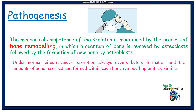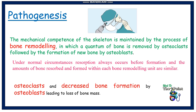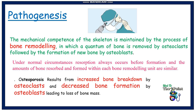Under normal circumstances, resorption always occurs before formation, and the amounts of bone resorbed and formed within each bone remodeling unit are similar. Osteoporosis results from increased bone breakdown by osteoclasts and decreased bone formation by osteoblasts, leading to loss of bone mass.